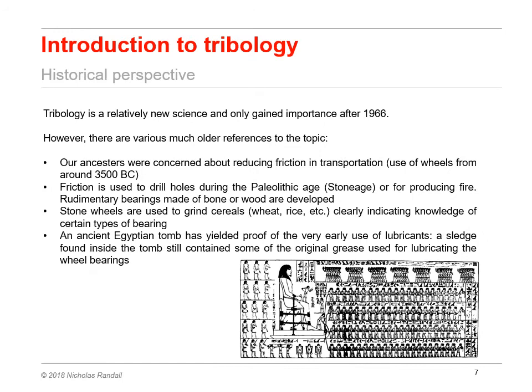In addition to Leonardo da Vinci's work, we can also find much earlier examples of tribological problem solving, such as adding animal fat to early wheel bearings to reduce friction, or grinding cereals with wheels incorporating solid bearings. You can see a nice example of early Egyptian use of lubricants in the picture shown here. This red circle shows a man at the front of the pharaoh's sledge pouring a liquid under the runners to make them slide easier.